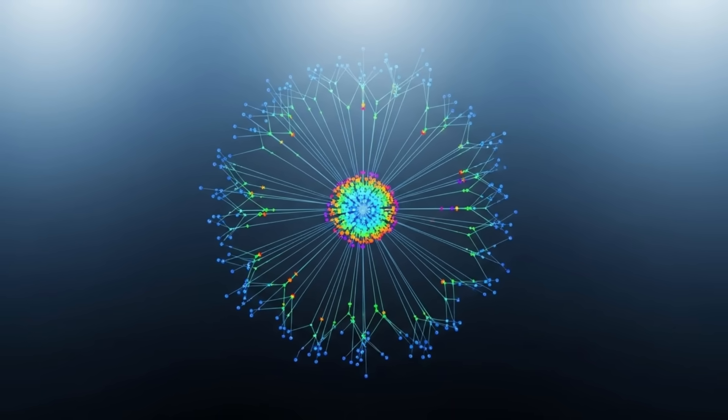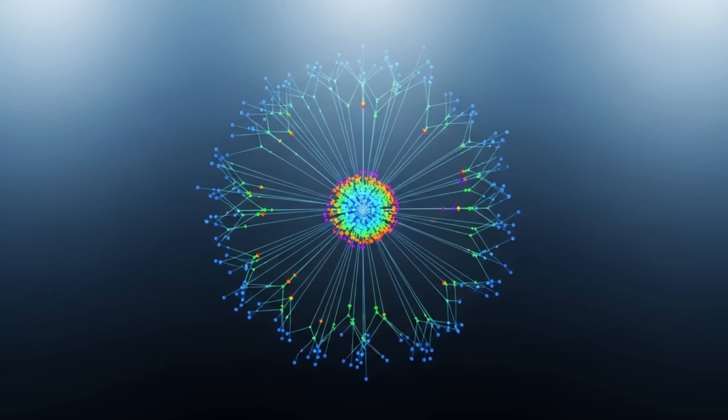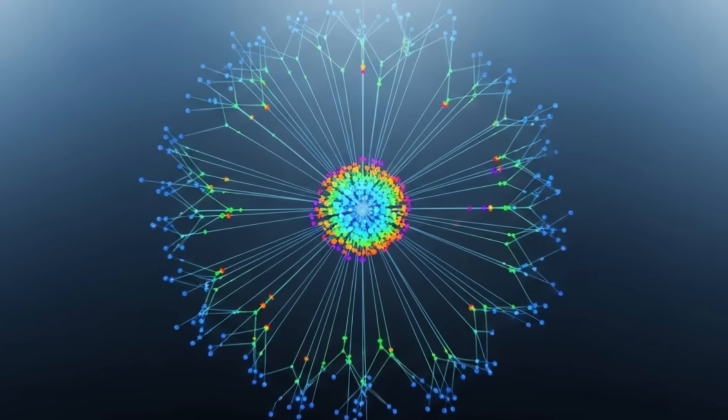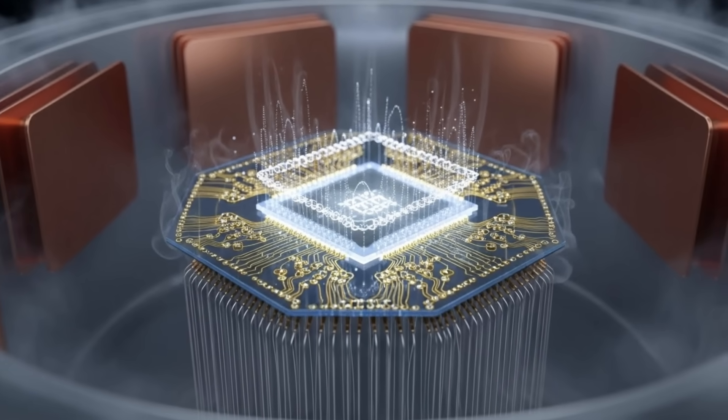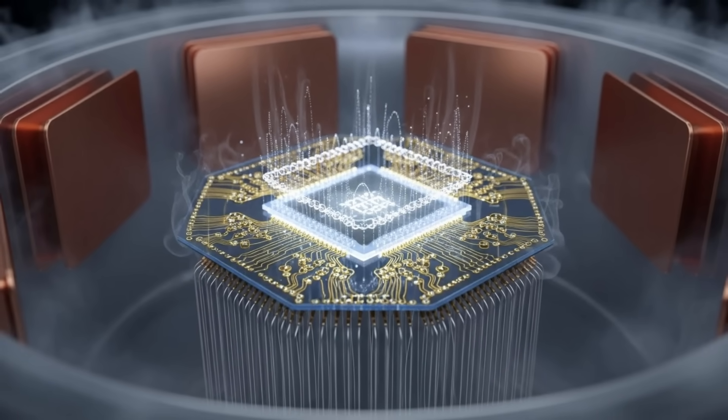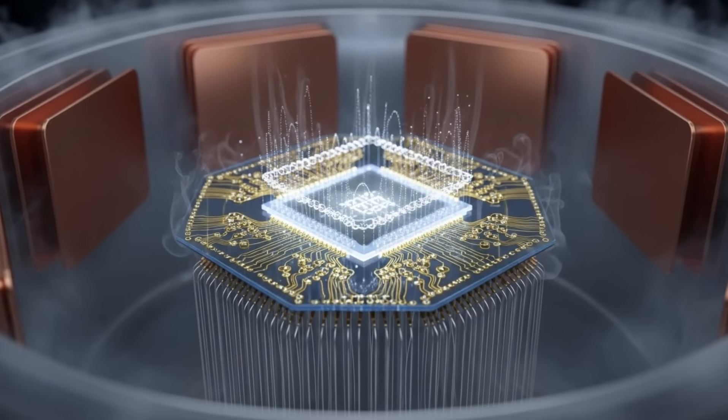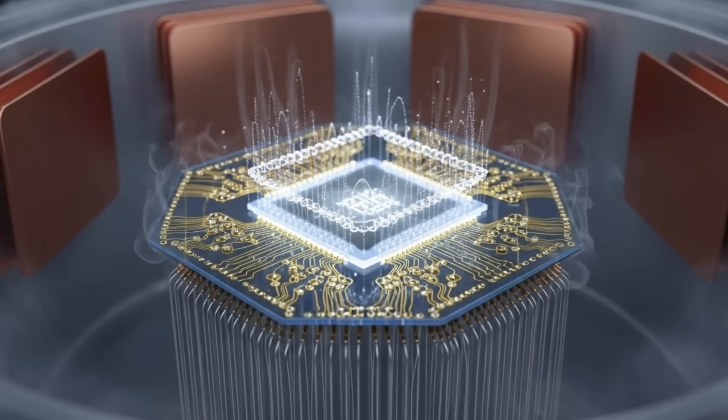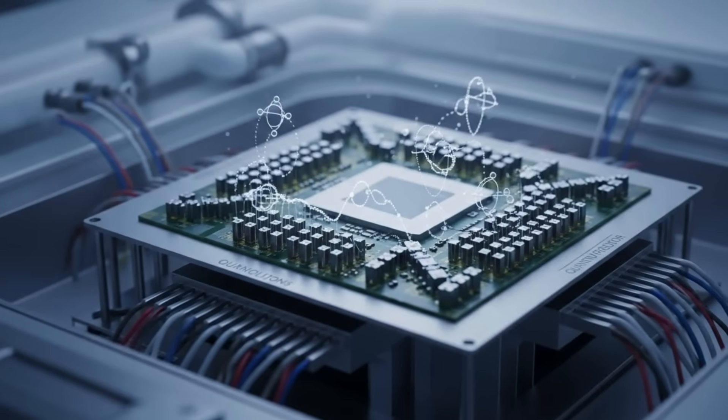Before we go, let's talk about how quantum simulations actually work, because it's pretty incredible. Traditional computers use bits—ones and zeros. Quantum computers use qubits, which can be both one and zero at the same time, thanks to a principle called superposition.